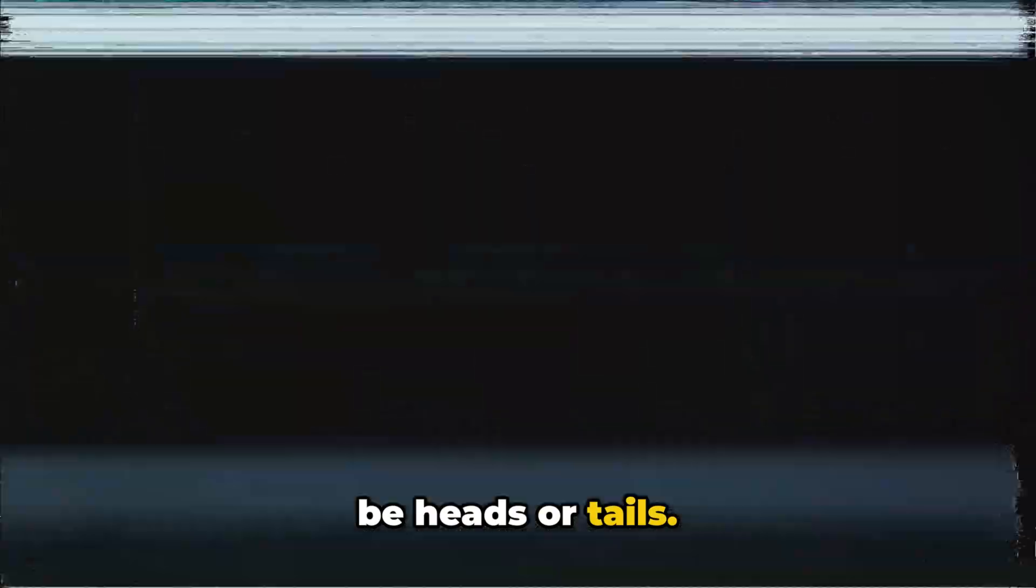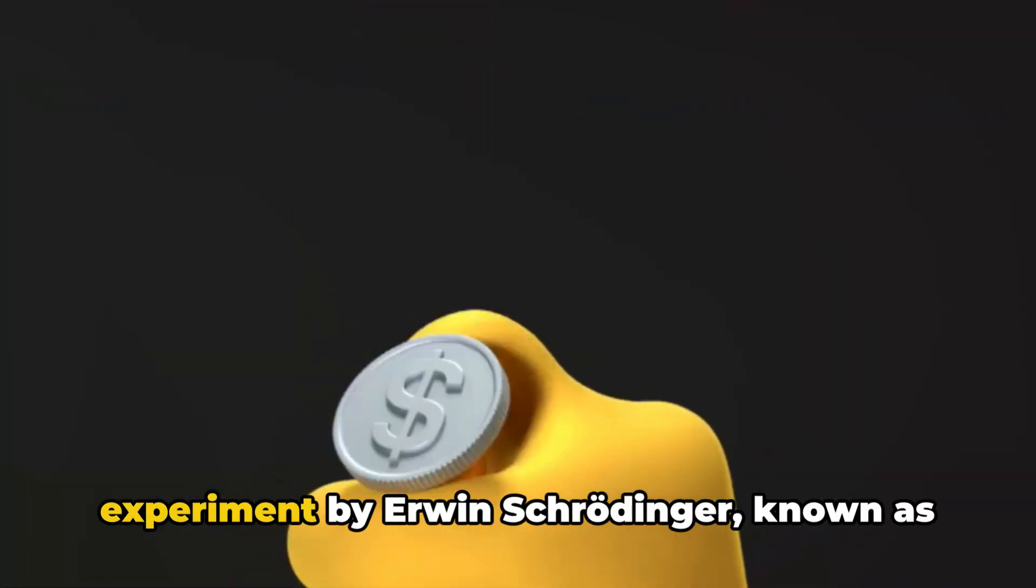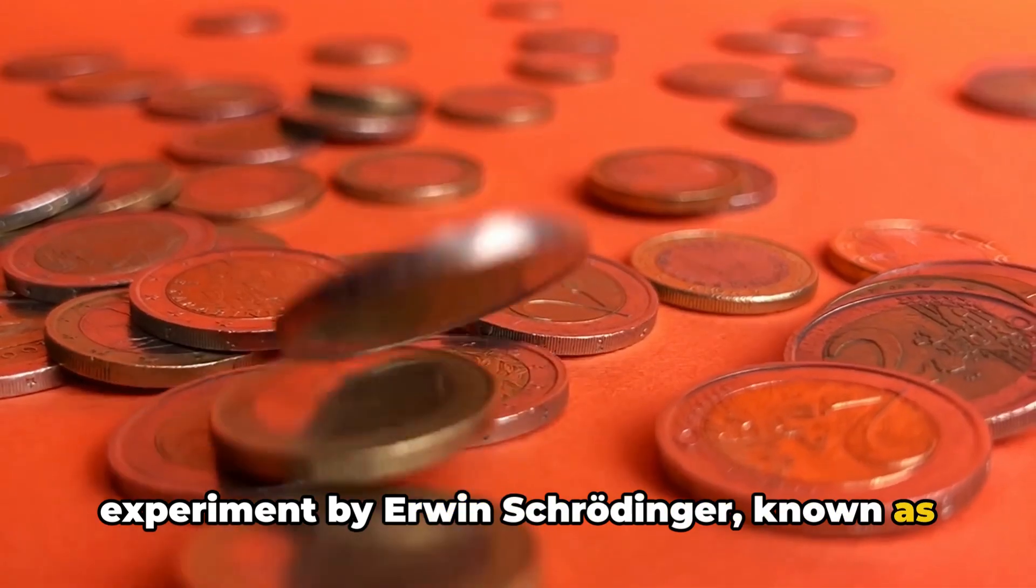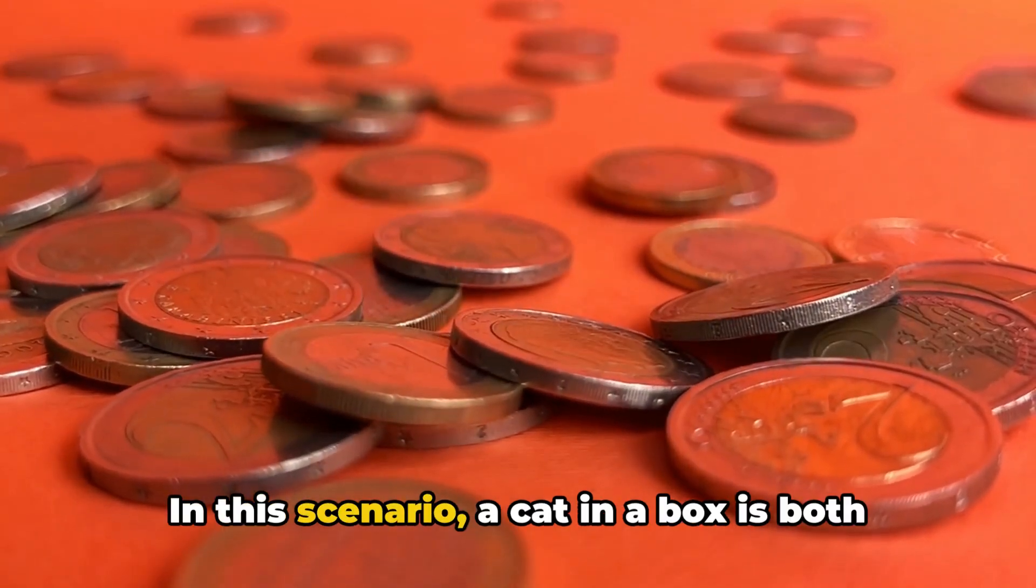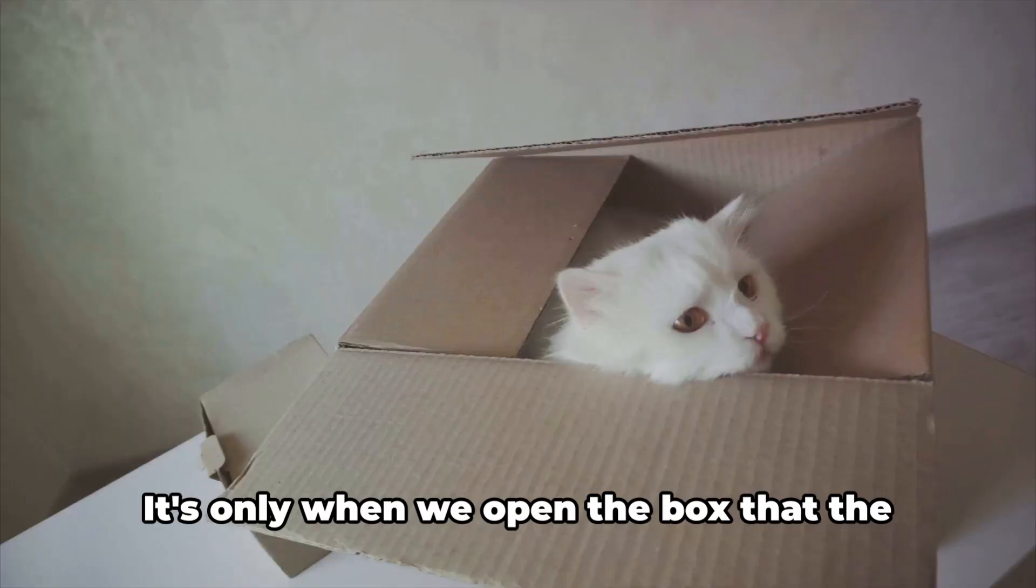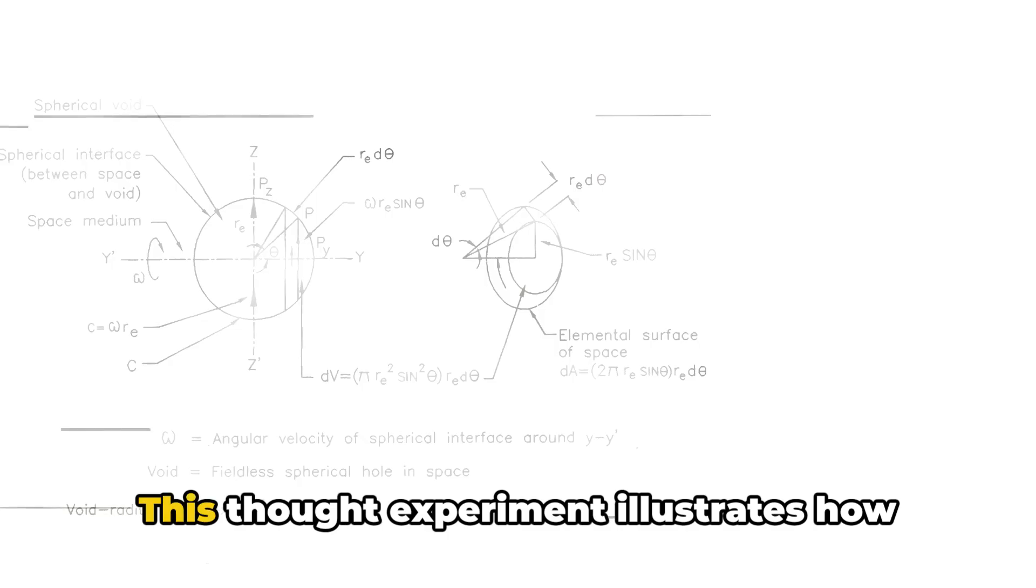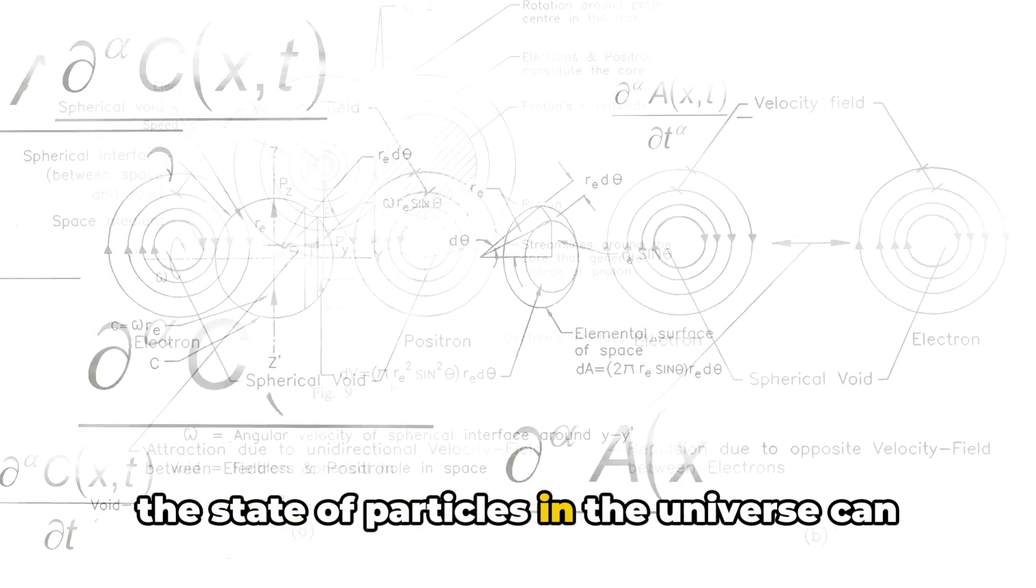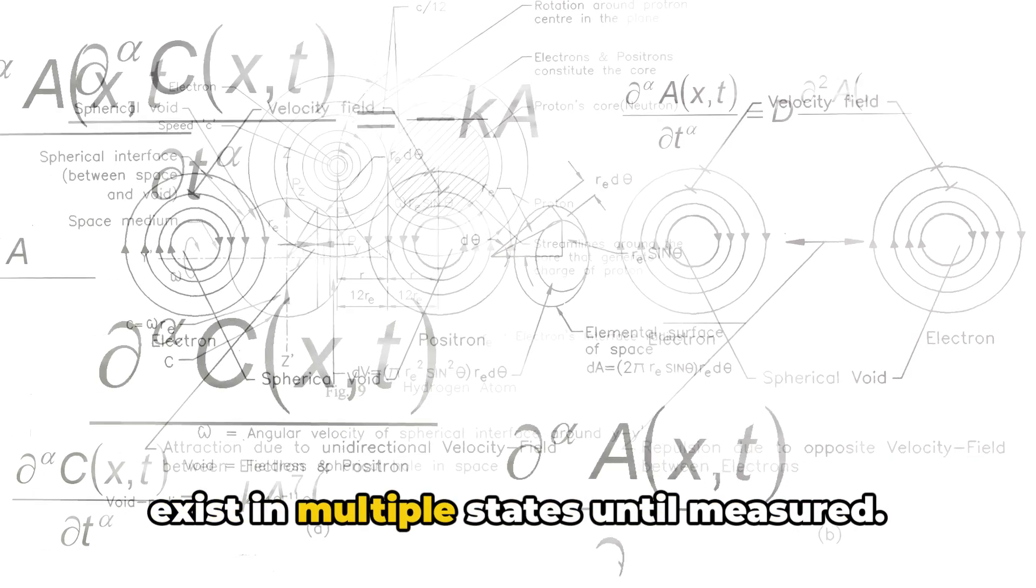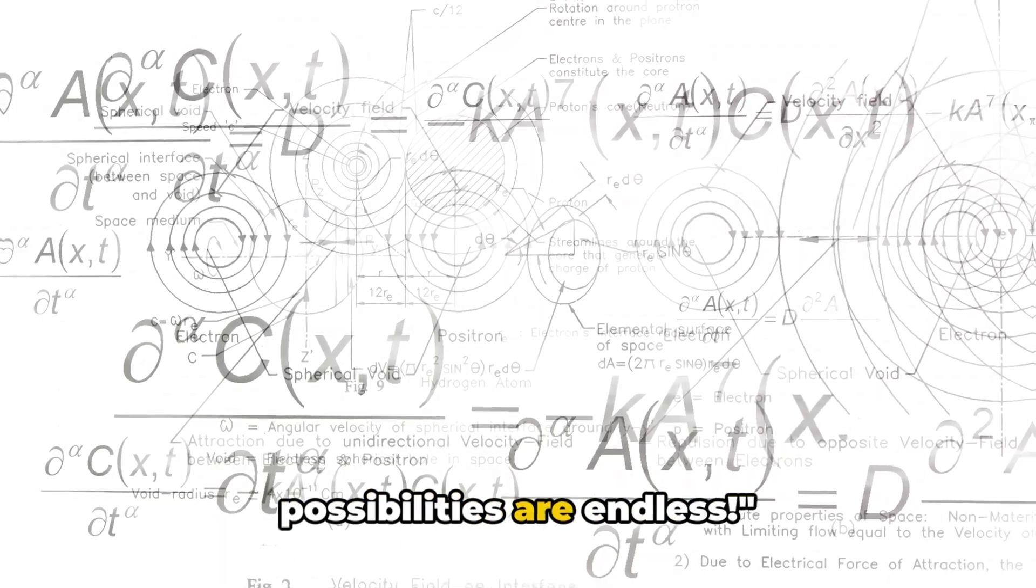Imagine you have a quantum coin. In our everyday world, a coin can either be heads or tails, but in the quantum world, this coin can be both heads and tails at the same time. This brings us to the famous thought experiment by Erwin Schrödinger, known as Schrödinger's cat. In this scenario, a cat in a box is both alive and dead until observed. It's only when we open the box that the cat's state becomes one or the other. This thought experiment illustrates how the state of particles in the universe can exist in multiple states until measured. Quantum superposition, where possibilities are endless.